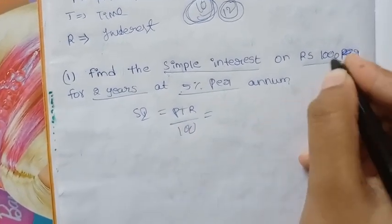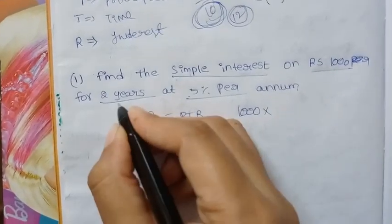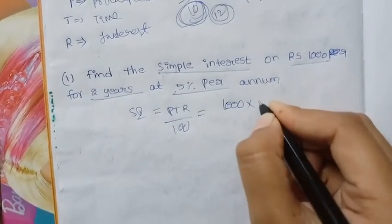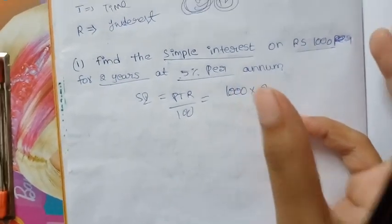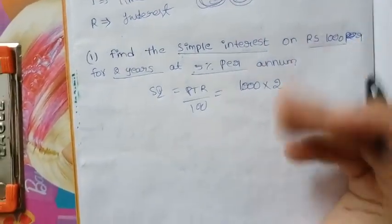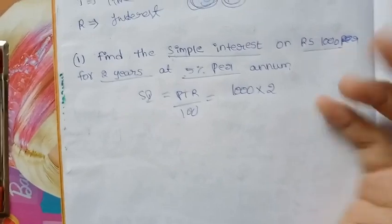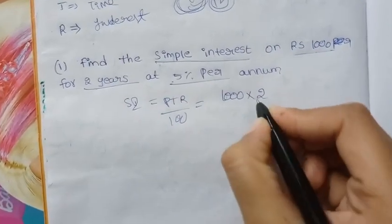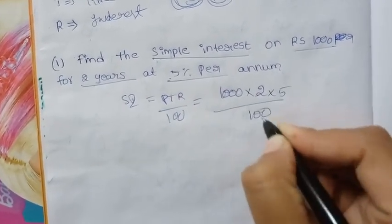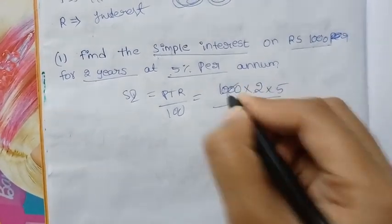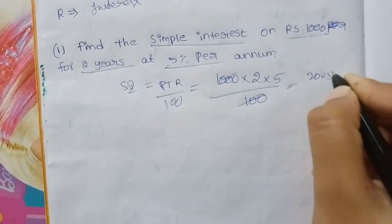The formula for simple interest is PTR divided by 100. P for principal amount is 1000 rupees, T for time is 2 years, R for rate of interest is 5%. Dividing: these two zeros cancel — 10 into 20, 20 into 5 is 100. The simple interest is 100 rupees.